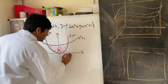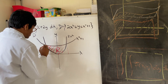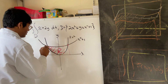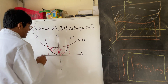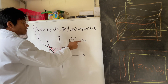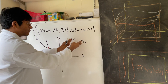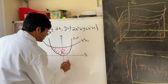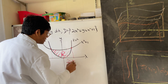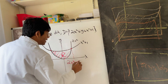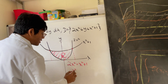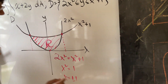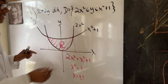The x-coordinates of the intersections are given by setting the two functions equal to each other. So: 2x squared equals x squared plus 1, which gives x squared equals 1, so x equals plus or minus 1. That means this x-value is 1 and this x-value is negative 1.